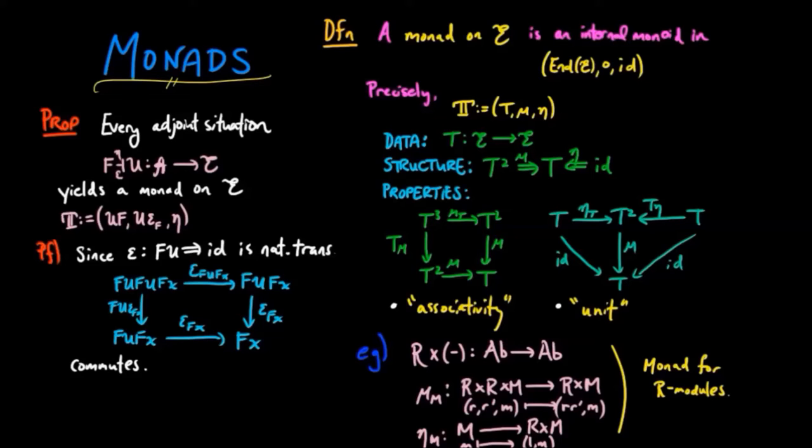we can apply this functor U to the square. And since every functor preserves commutativity diagrams, we have that this diagram commutes.